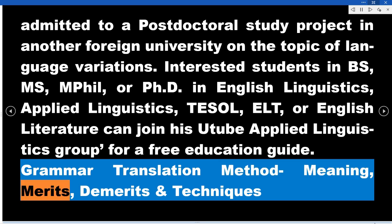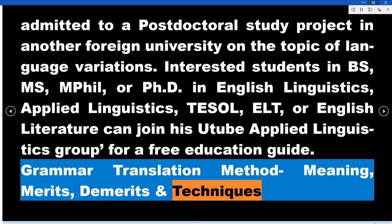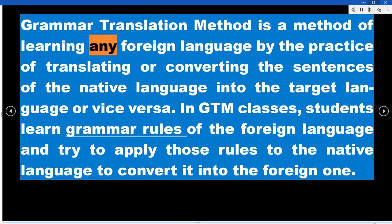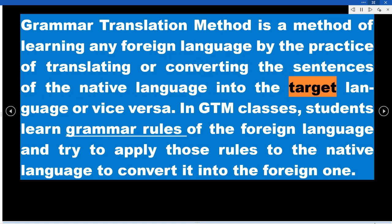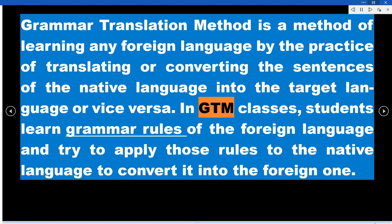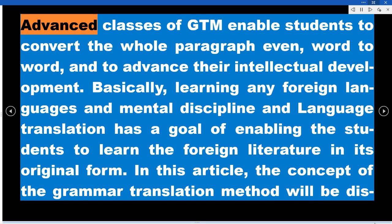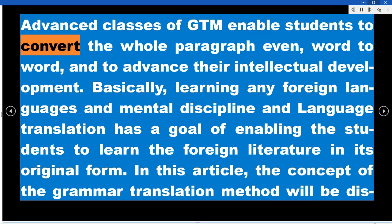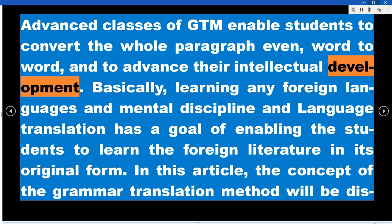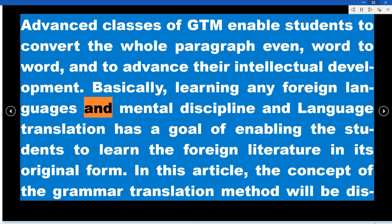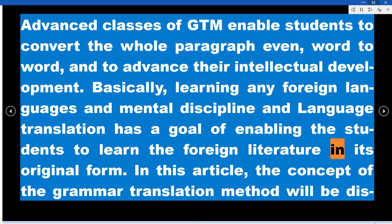Grammar Translation Method – Meaning, Merits, Demerits, and Techniques. The Grammar Translation Method is a method of learning any foreign language by the practice of translating or converting sentences of the native language into the target language, or vice versa. In GTM classes, students learn grammar rules of the foreign language and try to apply those rules to convert the native language into the foreign one. Advanced classes of GTM enable students to convert whole paragraphs word to word and advance their intellectual development. Learning any foreign language involves mental discipline, and language translation has the goal of enabling students to read foreign literature in its original form.